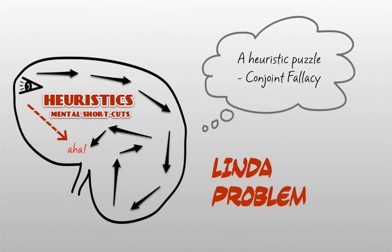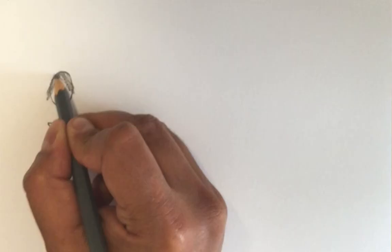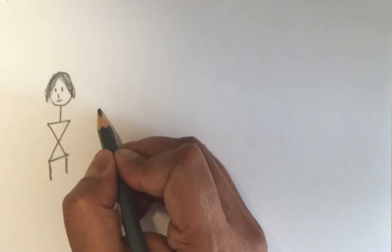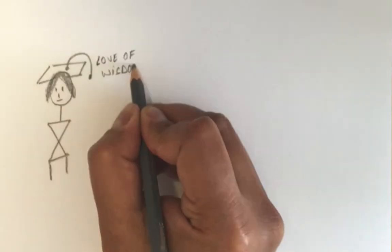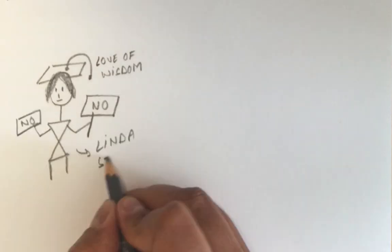Here is another heuristic puzzle, the famous Linda problem. Linda is 31 years old. She is single, outspoken and very bright. She majored in philosophy. When she was a student, she was deeply concerned with issues of discrimination and social justice. She participated in every single anti-nuclear demonstration that was held in the campus.